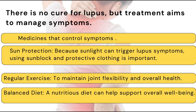Treatment focuses on reducing symptoms so you feel better. There are many medicines available that control symptoms — you can ask your doctor to prescribe them. Sun protection is also very important, because sunlight can trigger lupus symptoms. Using sunblock and protective clothing is essential.